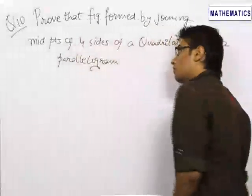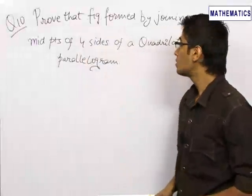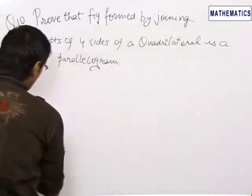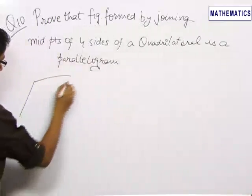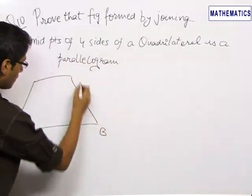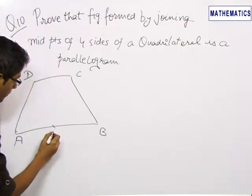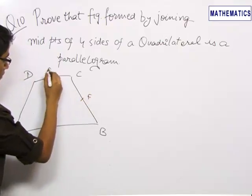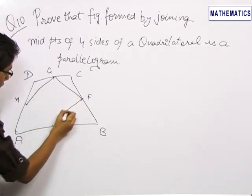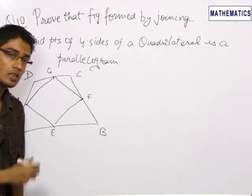This is problem ten, which wants us to prove that the figure formed by joining the midpoints of the four sides of a quadrilateral is a parallelogram. So we make a quadrilateral — let us say this is A, B, C, and D. They want us, if we join the midpoints E, F, G, and H, then the figure E, F, G, H — they want us to prove that this is a parallelogram.